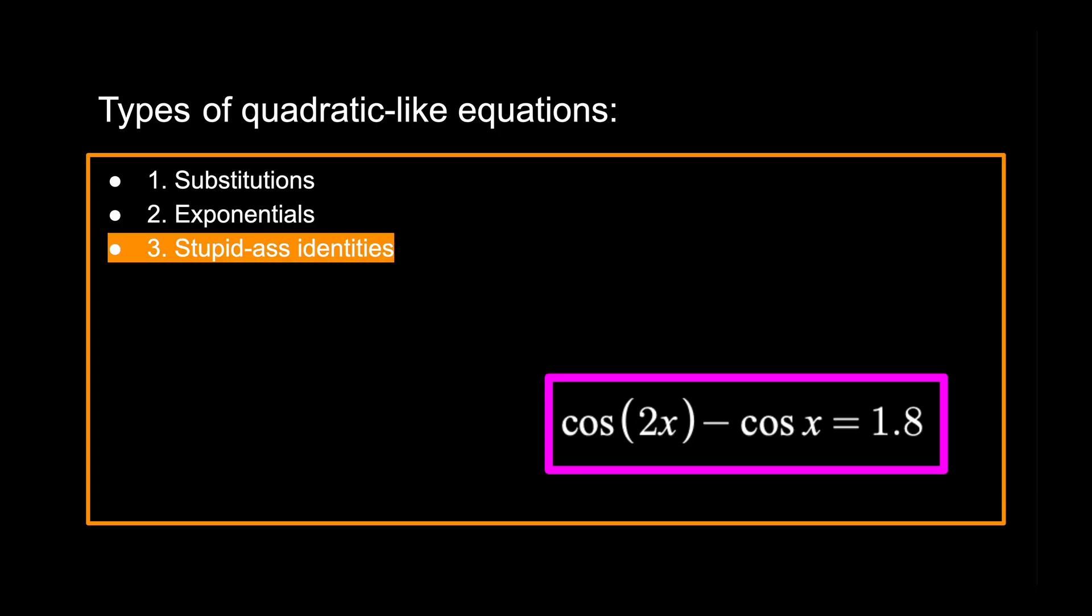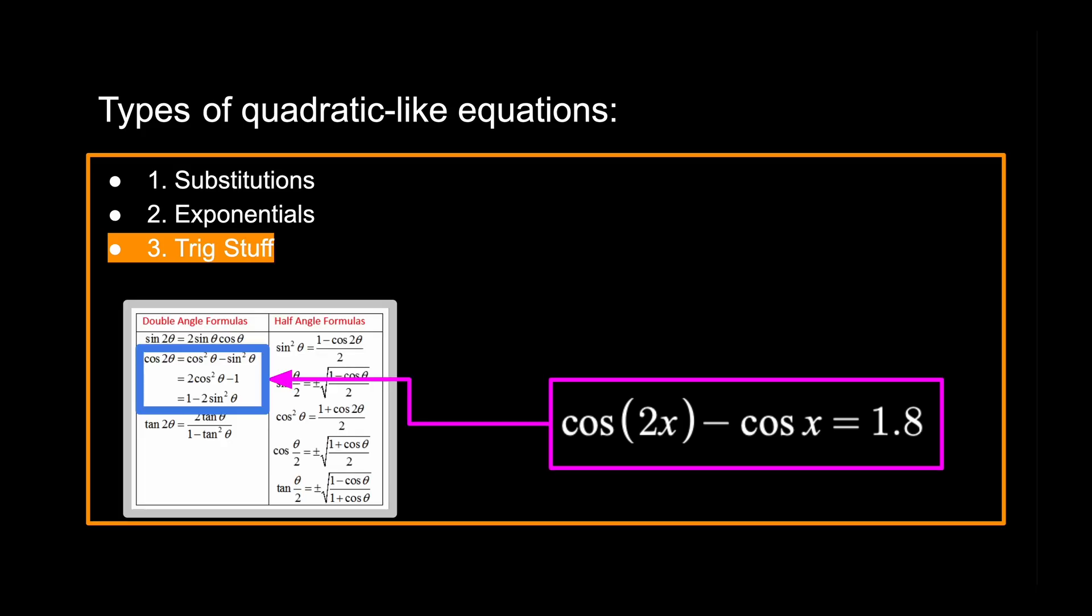The final kind are the ones you have to use some stupid-ass identity to simplify the equation. If you see a trig function, it'll probably be one of these.